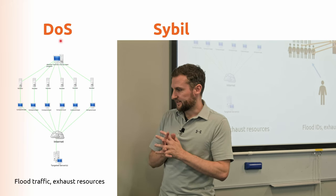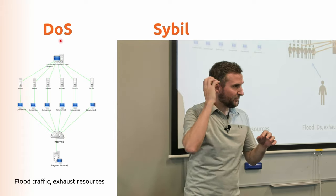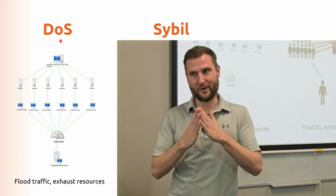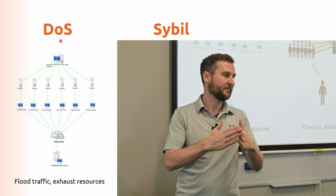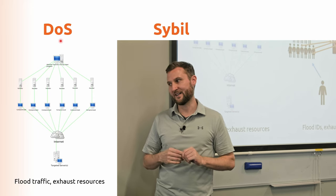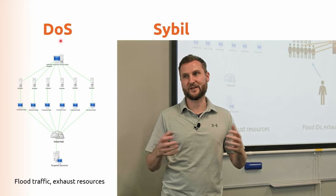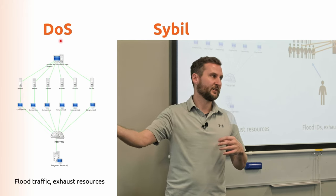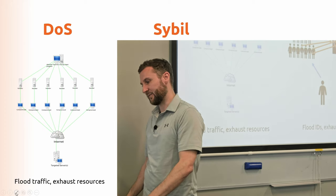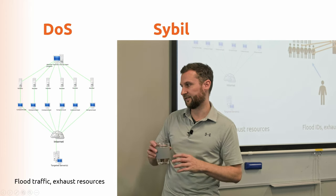Denial of service attacks are less important in blockchains because of their distributed nature. If you want to take down a central website or a state election site, it's in one place and you can find it. But in a distributed system, if someone directs traffic at my node to eat up its resources, other nodes pick up the slack and process transactions. It may affect me personally, but the more distributed the blockchain, the less this is a problem. The incentive mechanisms should also take care of Sybil attacks — these essentially take care of themselves.